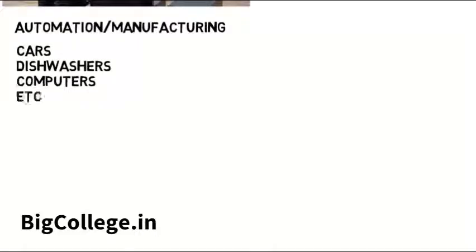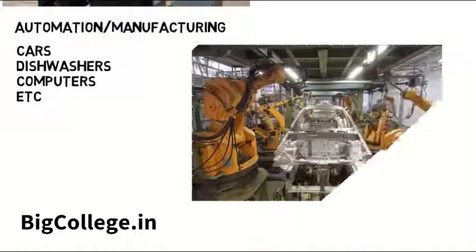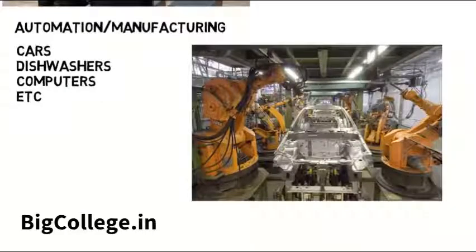Robotics are also used in automation and manufacturing. Pretty much any product out there from cars to dishwashers to computers are made with the help of robots which can assemble, paint, drill, and just build things with extreme precision.